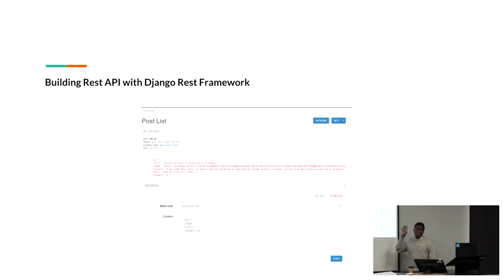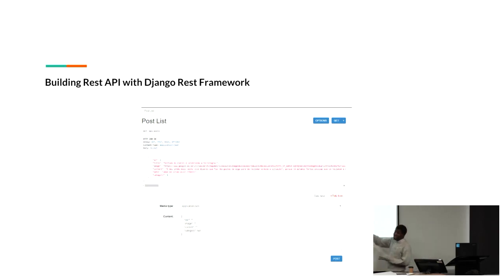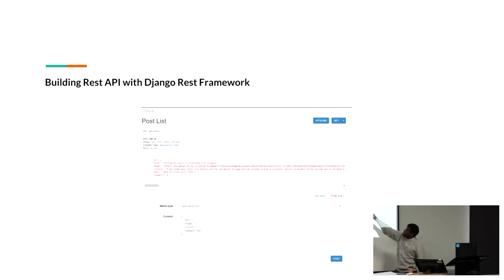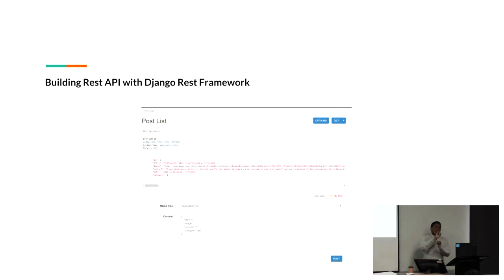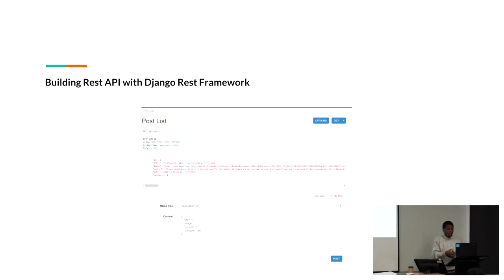This is basically the same thing that Django provides for us in the admin. Using this, you can add data also. You can have different methods. For example, we are using the GET method here to get all the data. If it's not a POST request, you can do that also. Django handles the routing for you — if the request is POST, do that; if the request is GET, do this. Django handles everything for you so you can focus on solving your problem and building your application.